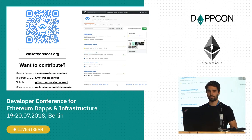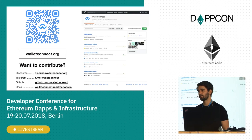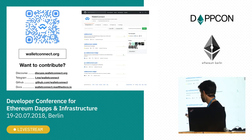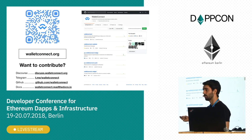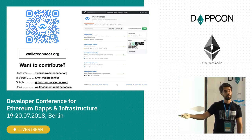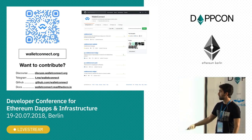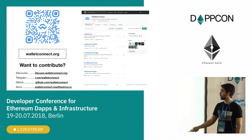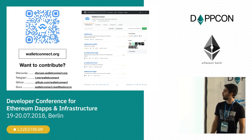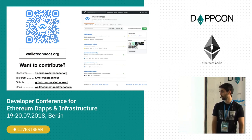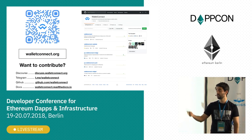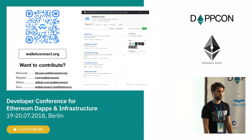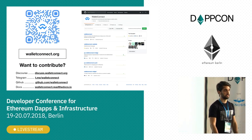If you'd like to contribute, there's a Discourse channel where most of these discussions happen. Telegram, GitHub — everything is open source. You can see the libraries for the bridge, the push server, the web app, and the wallet. Documentation is at walletconnect.docs.io. You can scan the QR code for the website which includes most of these links. Thanks.